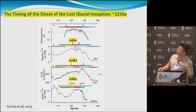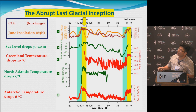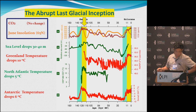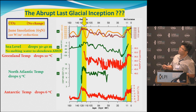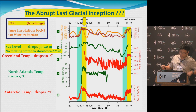Now, last glacial inception. The synthesis paper shows the onset is about 121,000 years ago. CO2 actually doesn't change. The June insolation changed very largely — much larger than the change during our current interglacial. Sea level dropped about 30 to 40 meters, temperature dropped about 10 degrees, North Atlantic surface temperature dropped about 5 degrees, and Antarctic temperature dropped about 6 degrees — almost half of the glacial-interglacial amplitude. Because sea level drops, we don't have meltwater to slow down AMOC, so the two major drivers are essentially constant and could not produce the abrupt glacial inception.